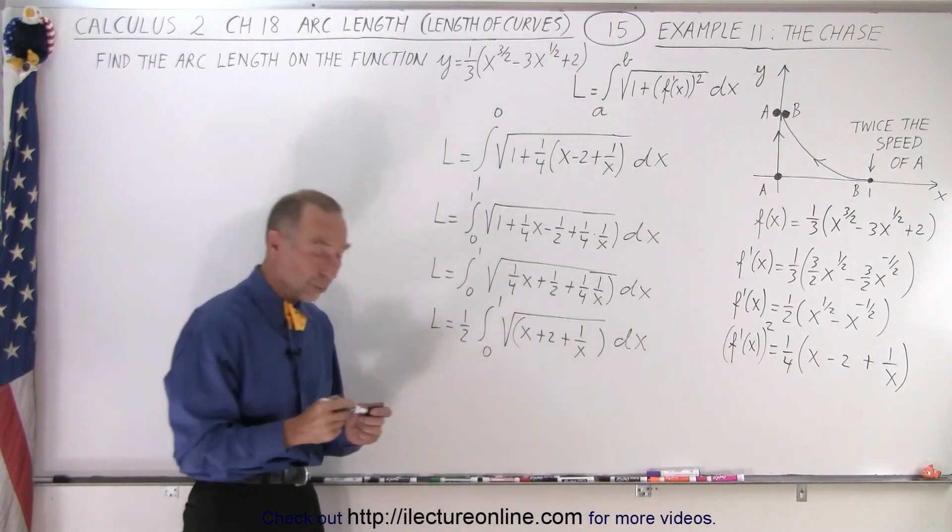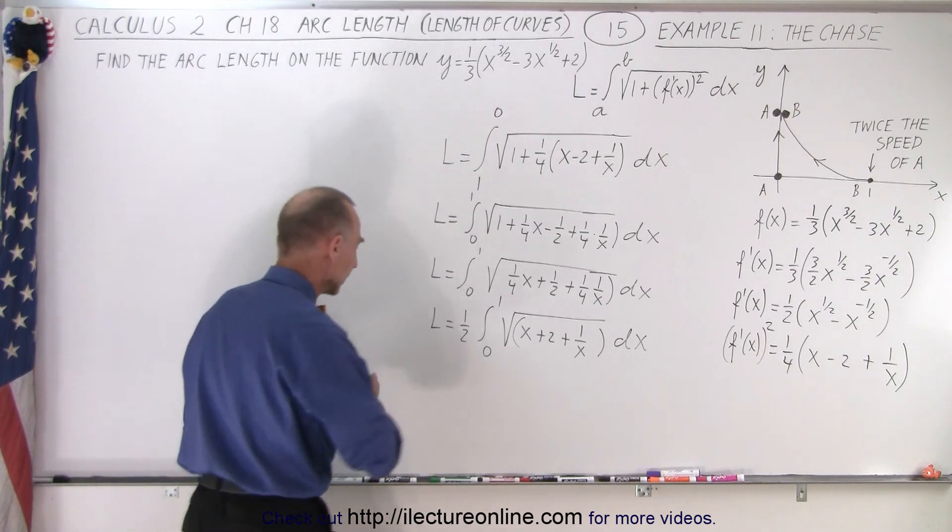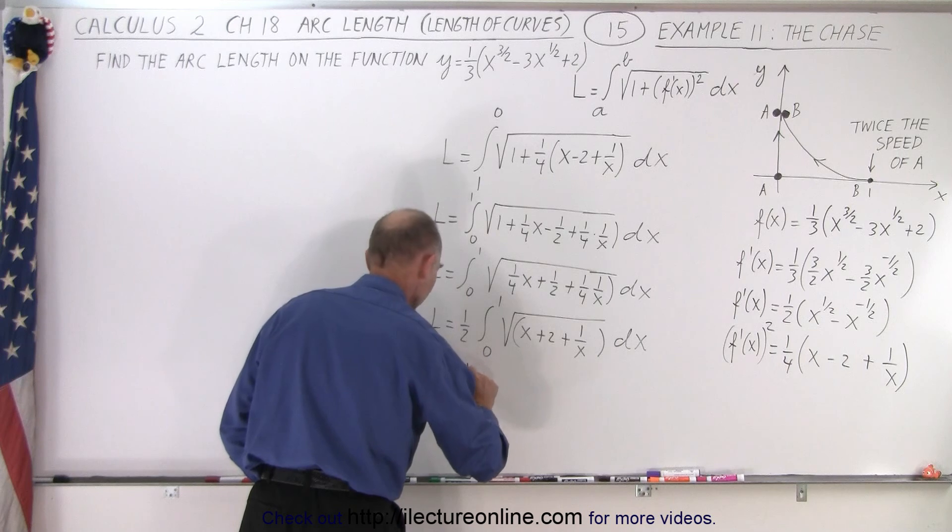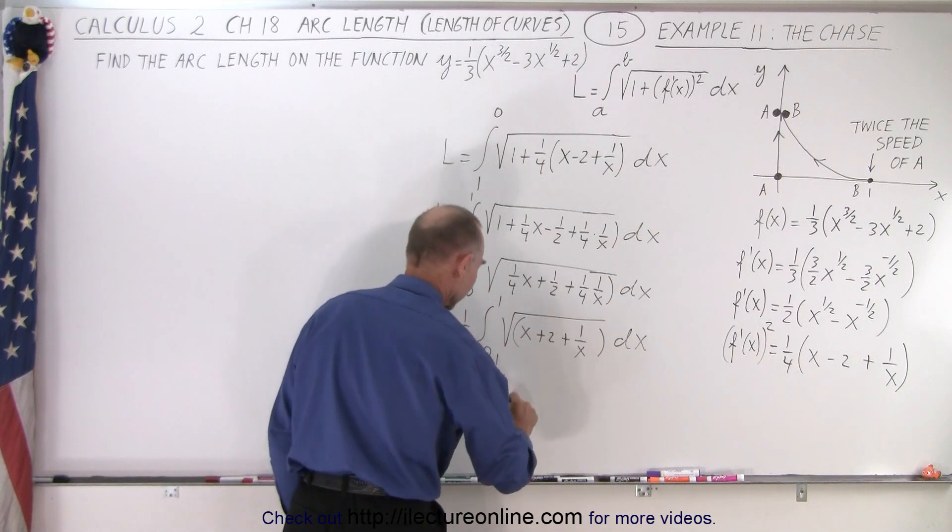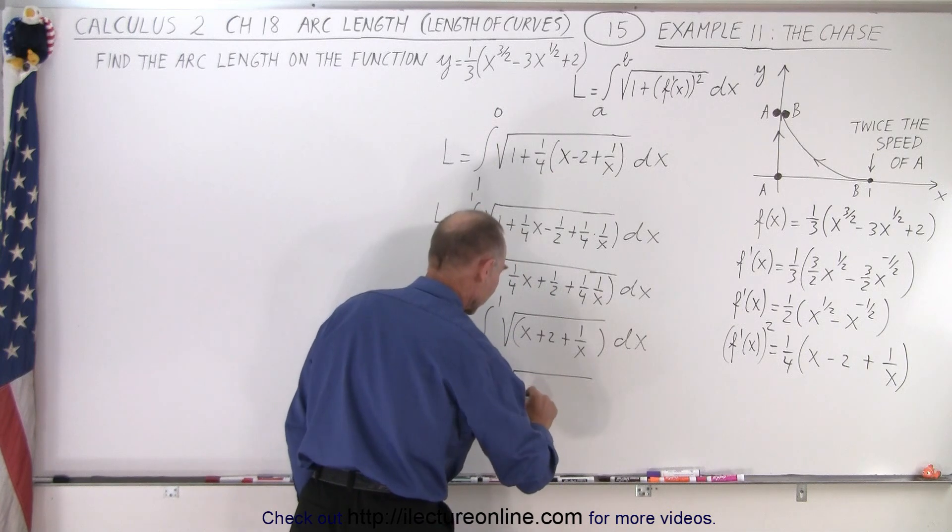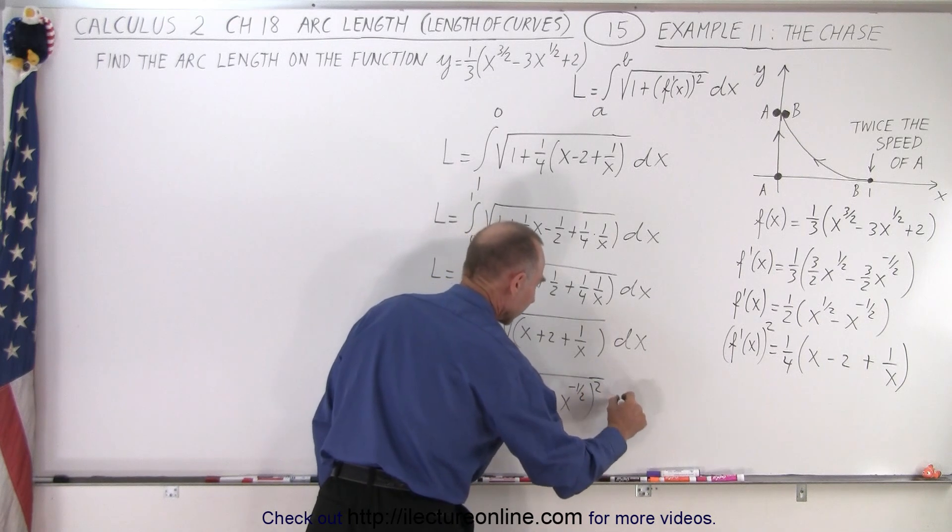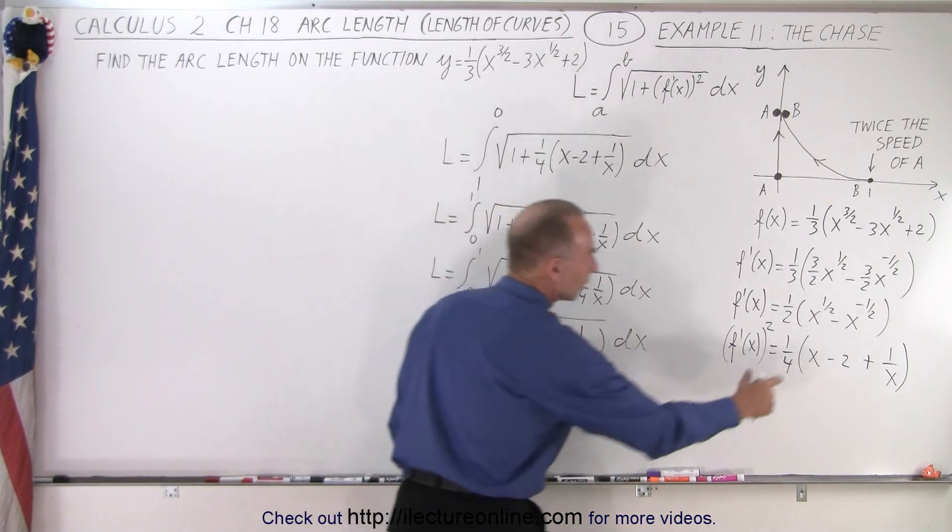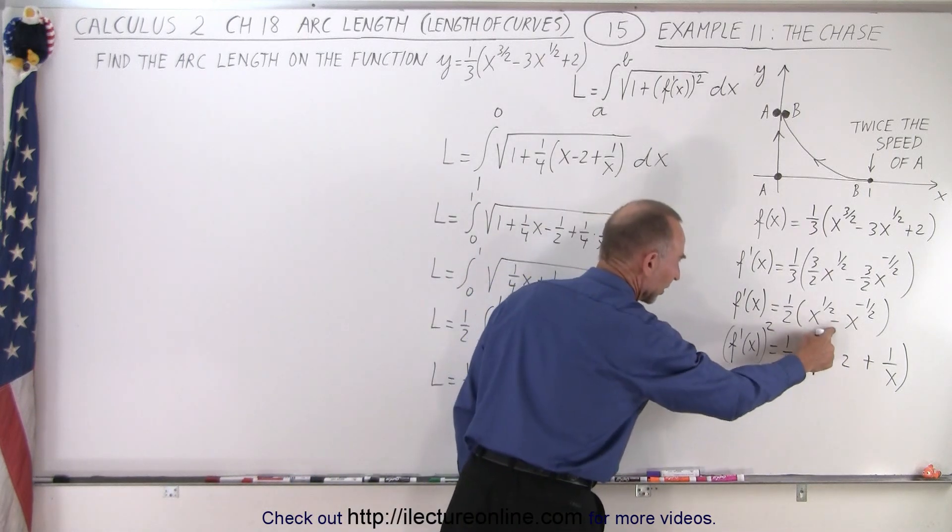And now it turns out we can take that expression and write it as the square of a binomial. So now we write L is equal to one-half times the integral from zero to one, and here we have the square root of x to the one-half plus x to the minus one-half quantity squared times dx. Notice we started with this and we end up with the same thing but with a plus instead of a minus.